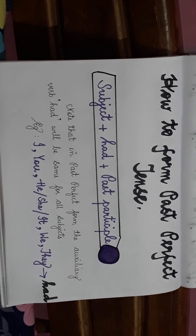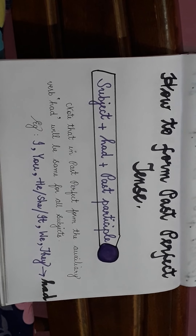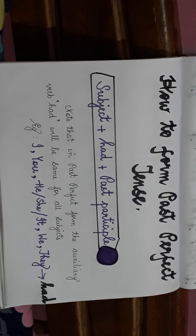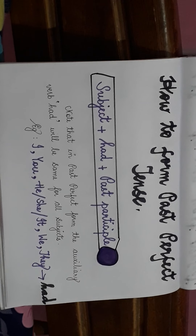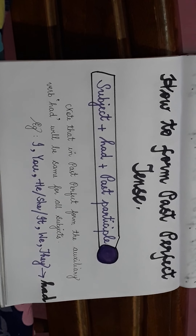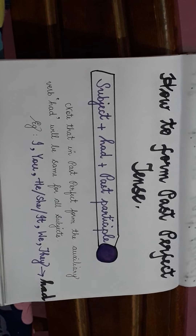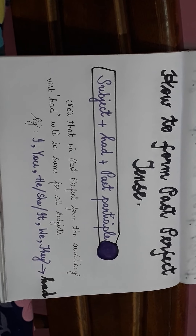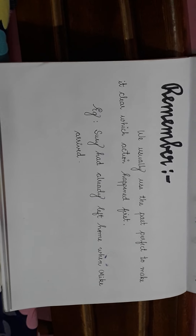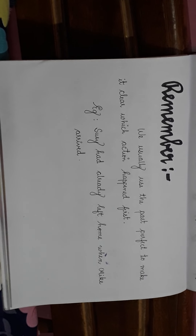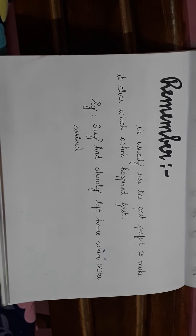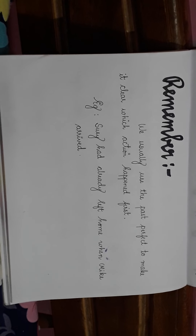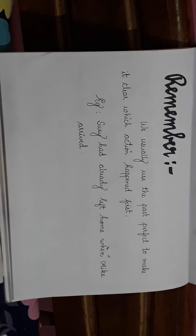In past perfect form, the auxiliary verb 'had' will be the same for all subjects. For example, whether your subject is I, you, he, she, it, we, or they — the auxiliary verb you have to use will be 'had'. We usually use the past perfect to make it clear which action happened first.